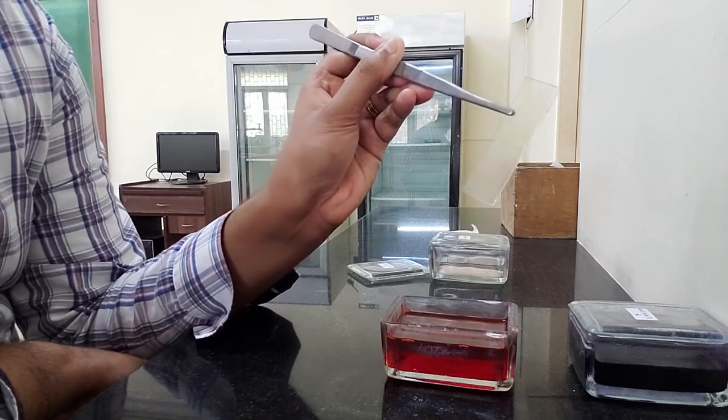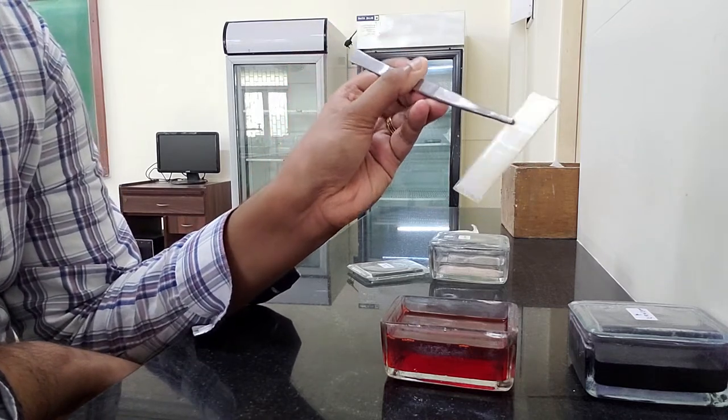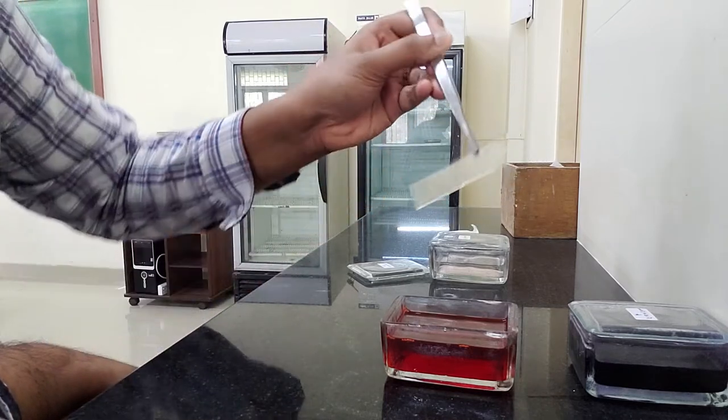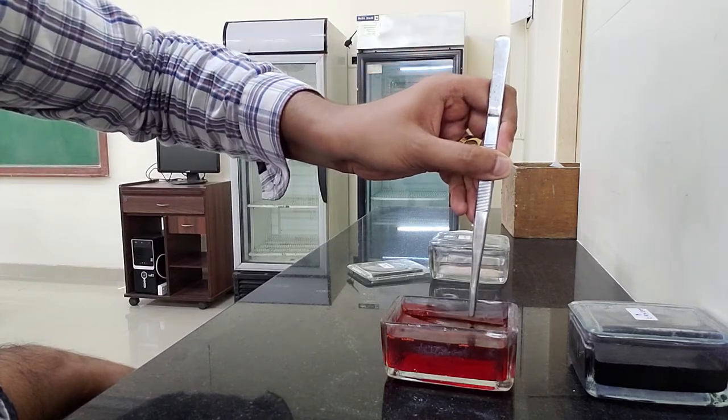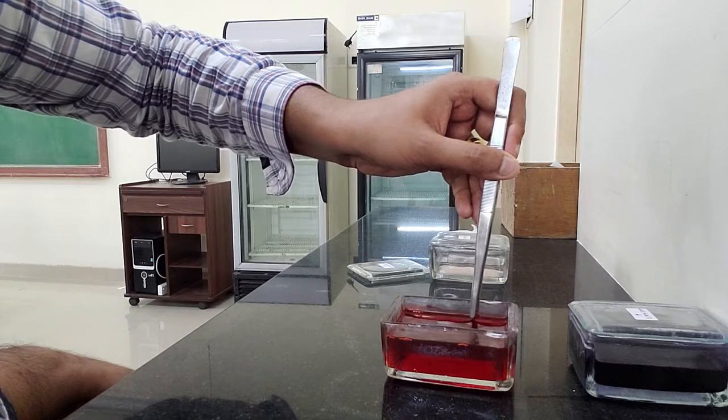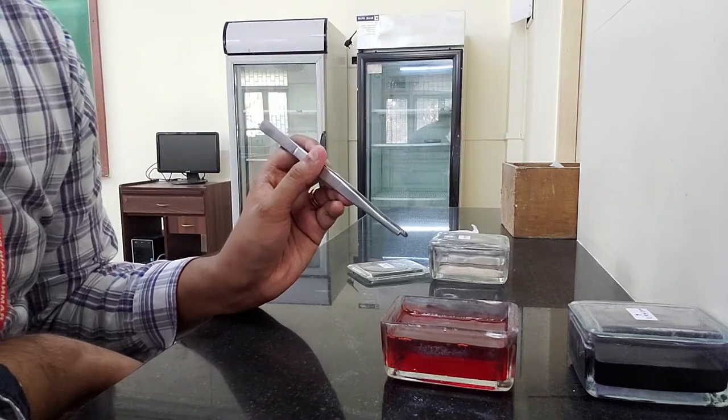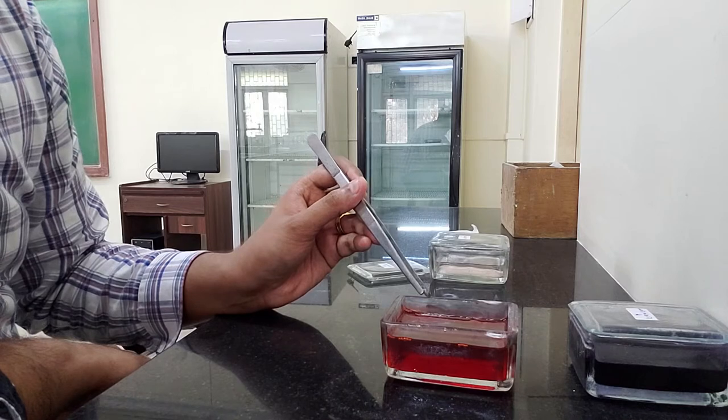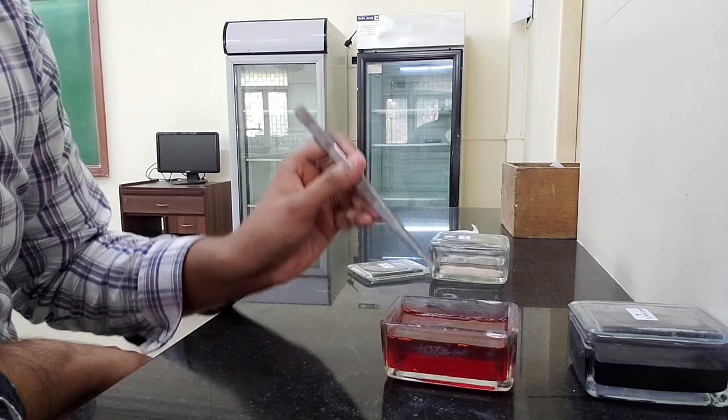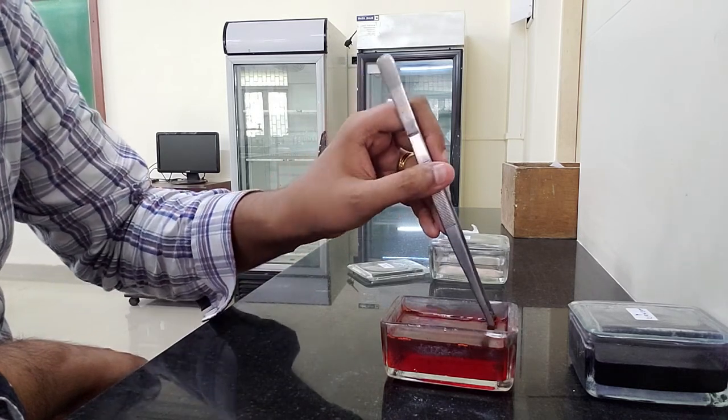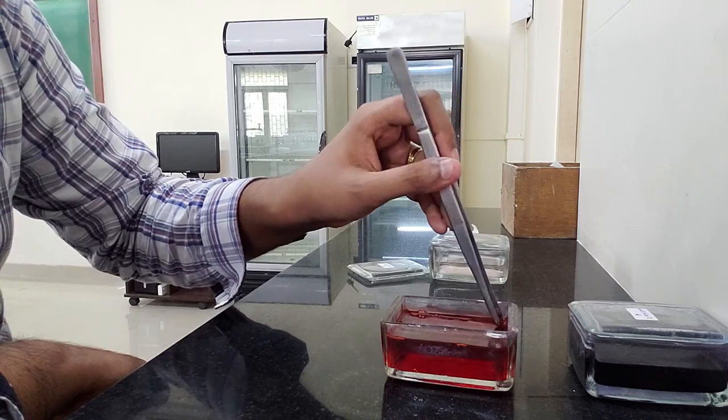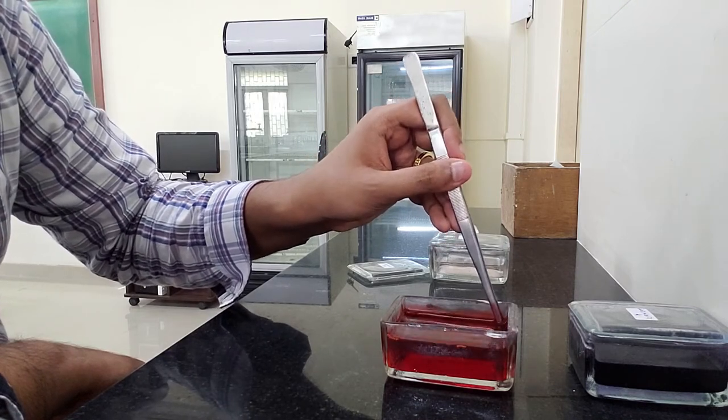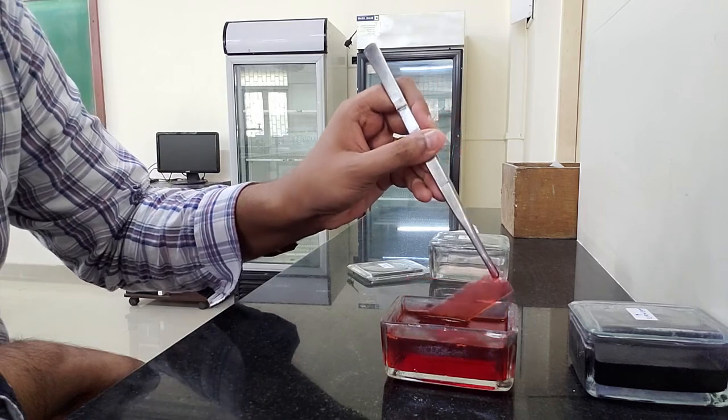Now that my slide is completely dry and all remnants of methanol has evaporated, you have to use a forcep and gently dip it into the Field stain B. You have to count five seconds. The moment five seconds is done, gently using the forcep see to it that you remove your slide.